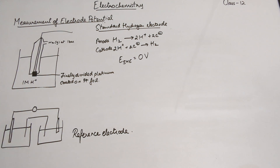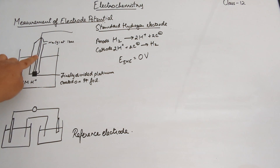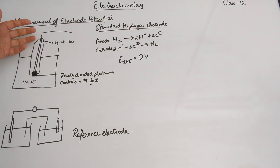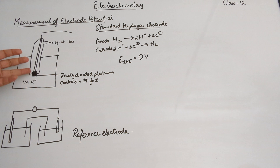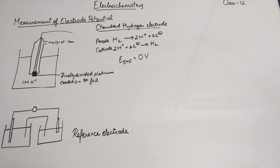To summarize: the measurement of electrode potential cannot be done with just a half cell — we need a complete electrochemical cell. We use the standard hydrogen electrode as a reference electrode. It consists of a glass tube with hydrogen constantly being pumped through it, a platinum rod, and a foil with finely divided platinum coated on it where oxidation or reduction takes place. The electrolyte is an acid with a concentration of one molar.